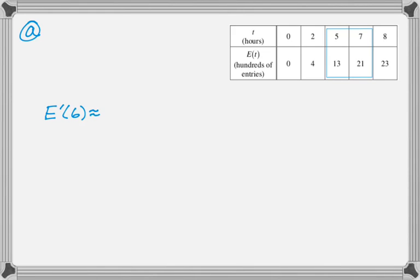So E of seven minus E of five over seven minus five. And then so that's going to be 21 minus 13 over seven minus five, which is two. And then overall, that is four.